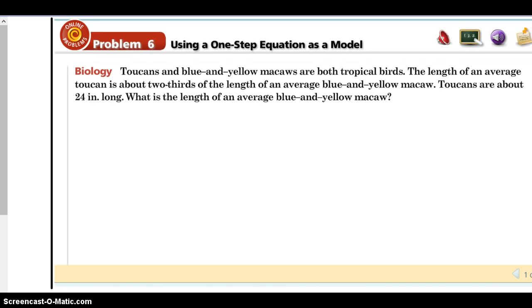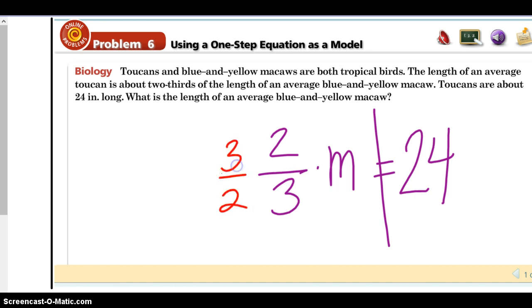One more! Toucans and blue and yellow macaws are both tropical birds. The length of an average toucan is about two-thirds of the length of an average blue and yellow macaw. Toucans are about 24 inches long. What is the length of an average blue and yellow macaw? See what you can do with it. Pause it. Come back to me. Alright, I see two-thirds of means times a black and yellow. There we go. Toucans are about 24 inches long. There we go. What in the world do I do with this two-thirds? I flip it. Divide it by 2. Times it by 3. 24 times 3. Divided by 2. Or I see... Ooh! 12 and 1. 12 times 3. 36. Don't forget to label it. Inches.